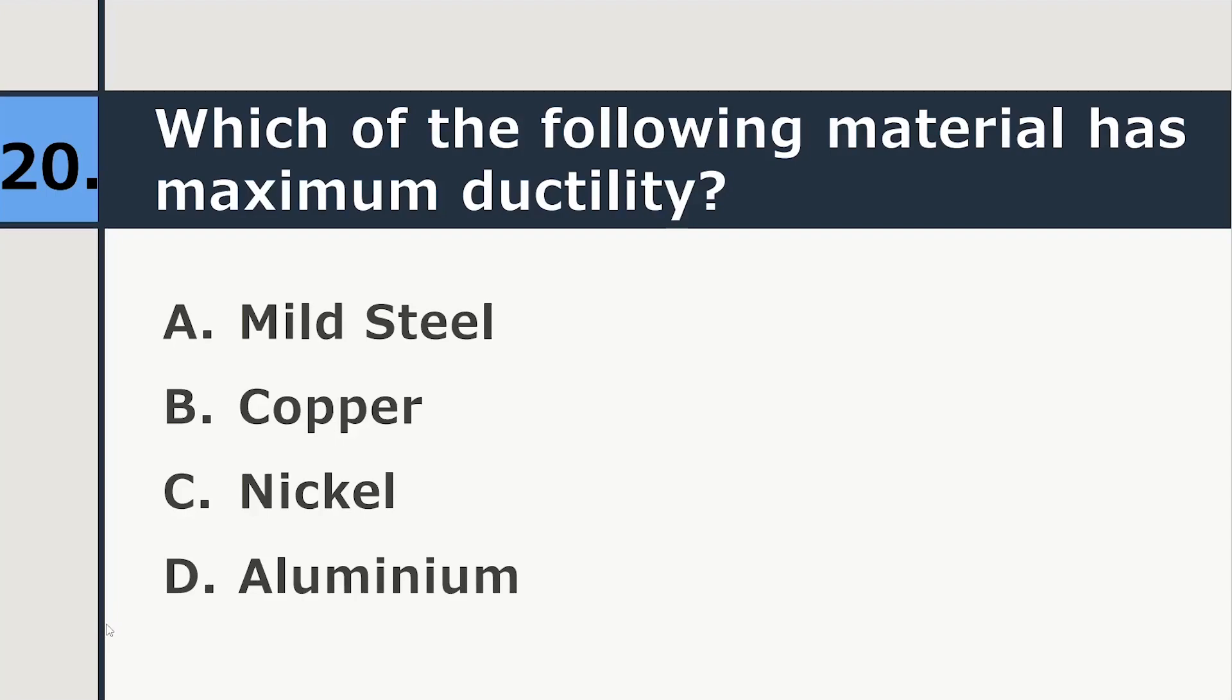Which of the following material has maximum ductility? Mild steel, copper, nickel or aluminium. So correct answer is mild steel.